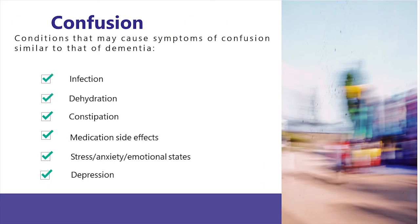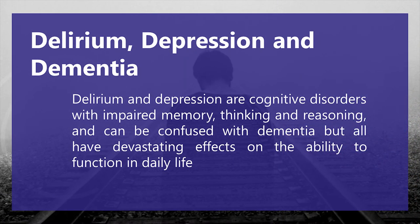I do want to say something about confusion. There are conditions that may cause symptoms of confusion similar to that of dementia. Just because someone is confused it does not necessarily follow that they are developing dementia. Their confusion could be caused by infection, dehydration, constipation, the side effects of medication, stress, anxiety, or some emotional states and depression. Delirium and depression are cognitive disorders with impaired memory, thinking and reasoning, and can be confused with dementia, but all have devastating effects on the ability to function in daily life.